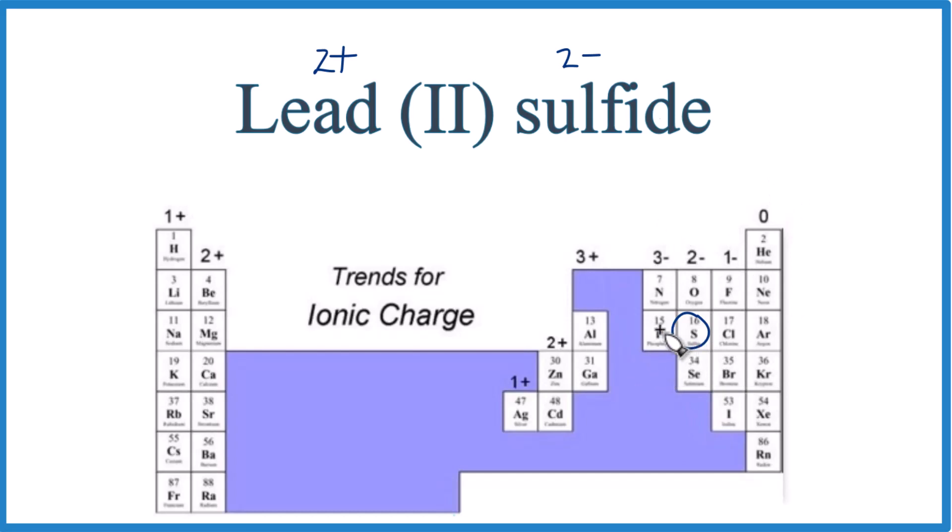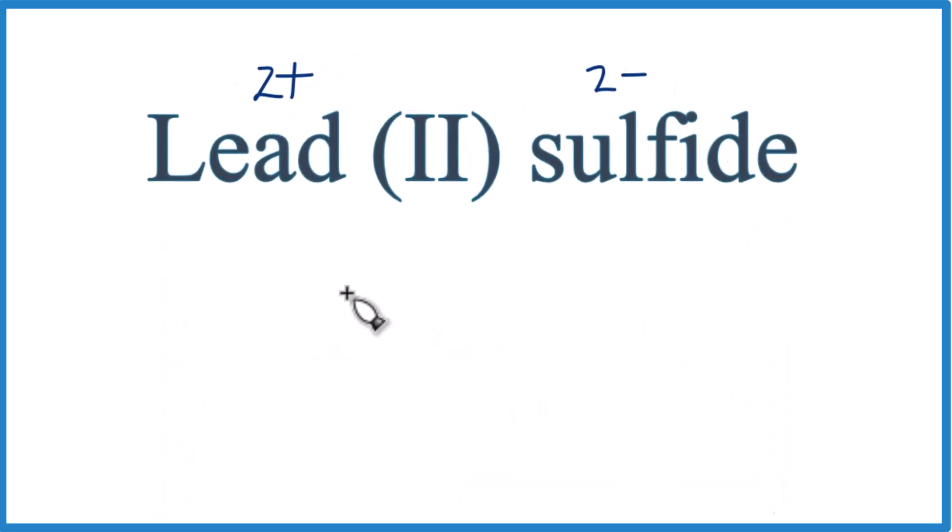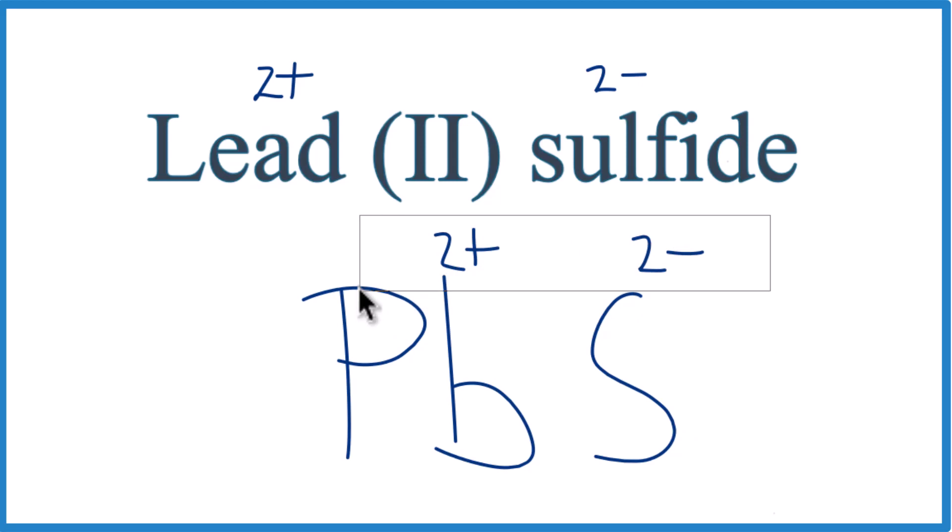Let's write the formula. We write Pb for lead, and sulfide is just S. If it was sulfate, then it'd be SO4. But for -ide, that's going to be a single element. Since we have a 2+ and a 2-, these charges balance out. So we can just get rid of them.